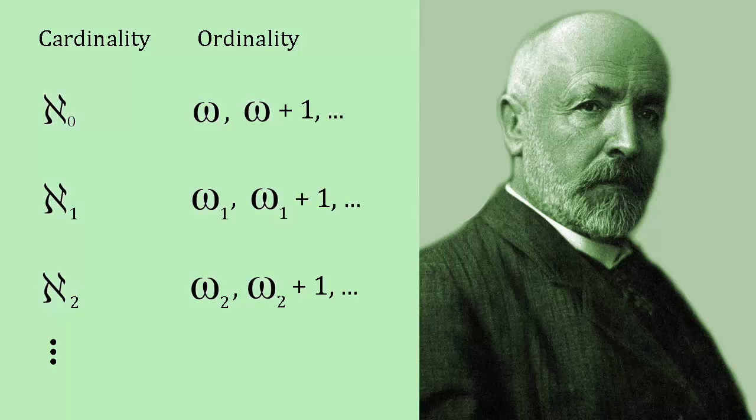But Cantor showed using a theorem that's now named after him that there's a hierarchy of infinities of which Aleph Null is the smallest. The next infinite cardinal, Aleph 1, is much bigger and is equal in size to the set of all countable ordinals.